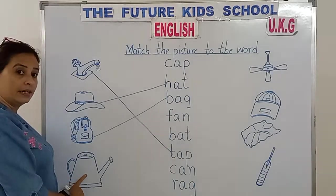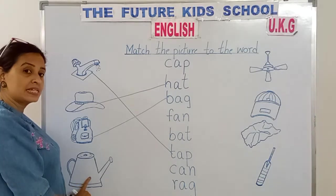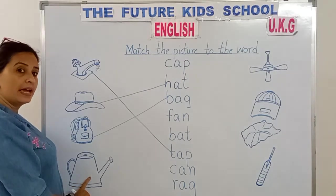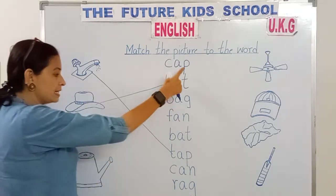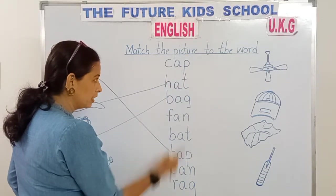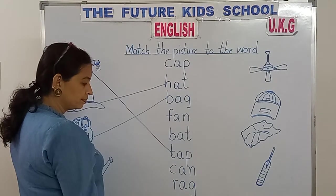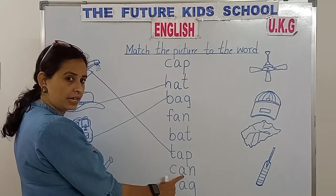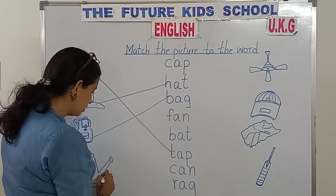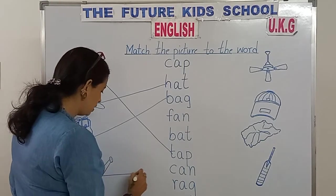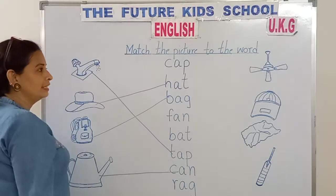This is a can. It's a picture of a can. C-A-N spells can. Now let's see where's the word can. Look, search in these words. Here is the word can. So match the picture can to its word. C-A-N can.